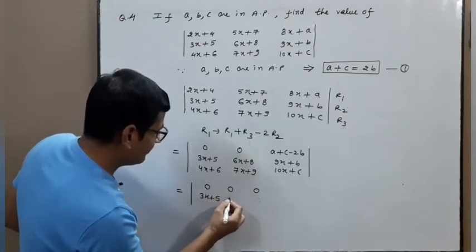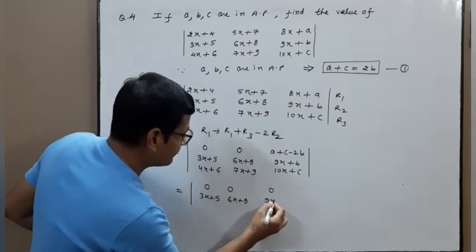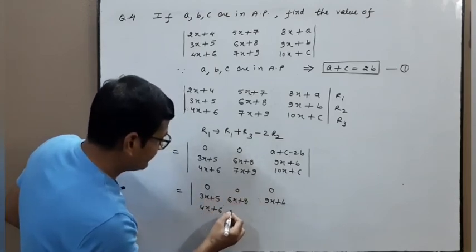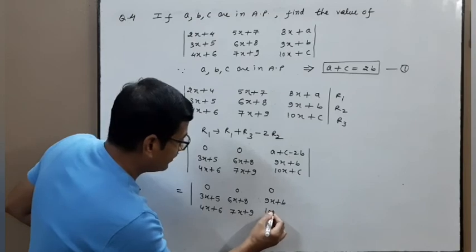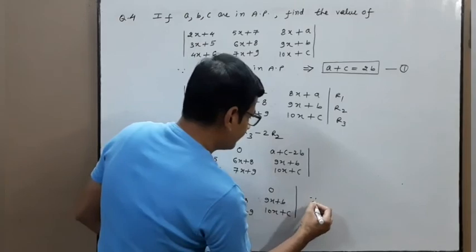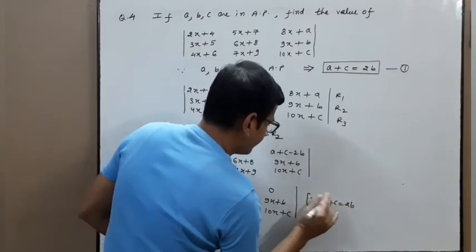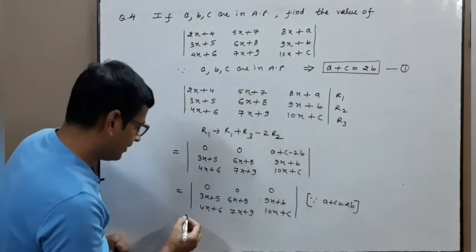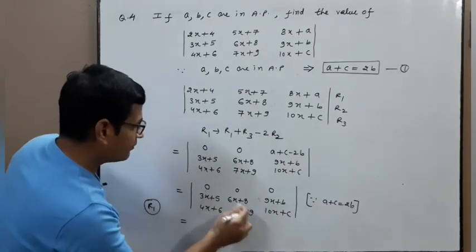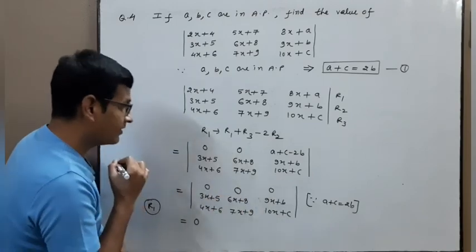So the first row is 0, 0, 0 with rows 2 and 3 being 3x+5, 6x+8, 9x+b and 4x+6, 7x+9, 10x+c. Since a+c = 2b, the value of the determinant equals 0. Expanding along R1: 0 times any cofactor = 0, so the overall answer is 0. Thank you, have a nice day.